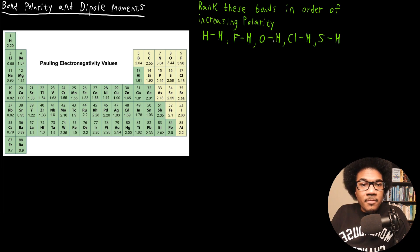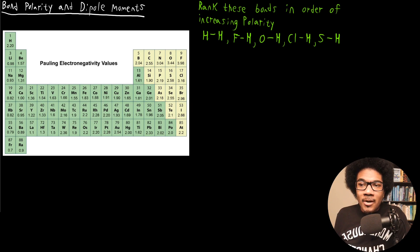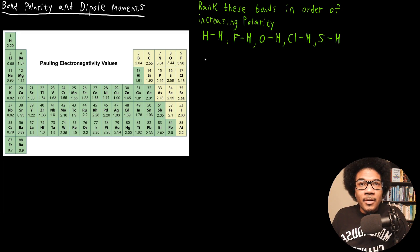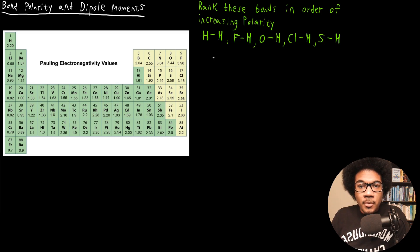We have HH, HF, HO, ClO, and SH — a bunch of different bonds involving hydrogen and another atom. We want to rank these in order of increasing polarity. I've put our electronegativity scale here to help determine the polarity for each bond. Keep in mind: the more polar a bond is, the greater the difference in electronegativity between the two atoms. If that difference is really large, you get an ionic bond; if there's a slight difference, you get a polar covalent bond.